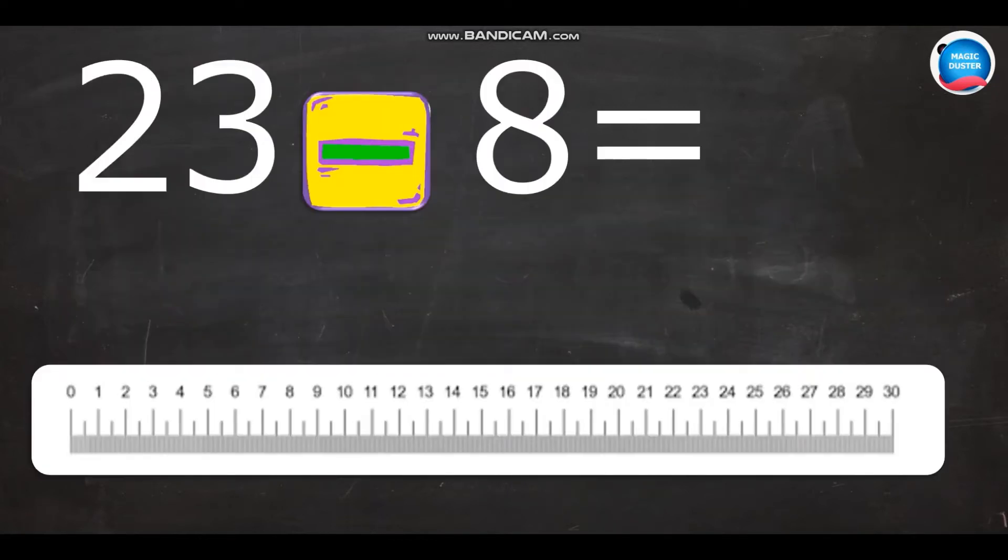Now we are going to learn how to do subtraction using a number line. 23 minus 8 is the question. To find out the answer, I should find where 23 is on the number line. Yes, here is 23. To reduce a number, I should jump in backward counting. So, let us start.